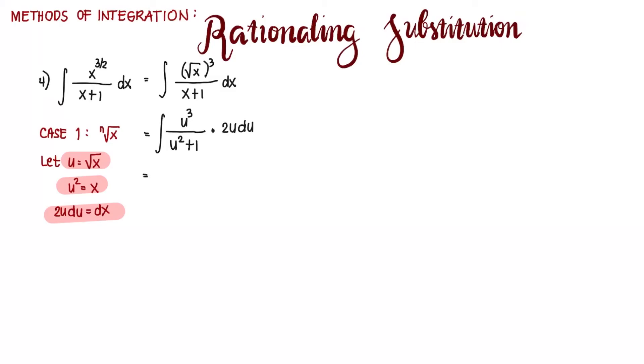We put 2 as the coefficient. That would give us u to the power of 4 du over u squared plus 1.